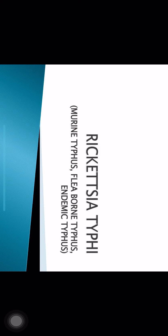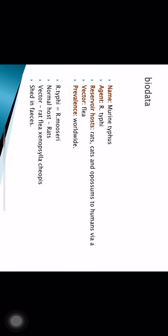Rickettsia typhi is the causative agent of murine typhus, also known as flea-borne typhus or endemic typhus. It does not lead to epidemics — it is present endemically in several areas. The reservoirs are rats, cats, and opossums. The vector is the rat flea Xenopsylla cheopis. Rickettsia typhi is also known as Rickettsia mooseri. Humans acquire infection by bite, when feces or saliva are rubbed on the skin, or through aerosols of dried feces.